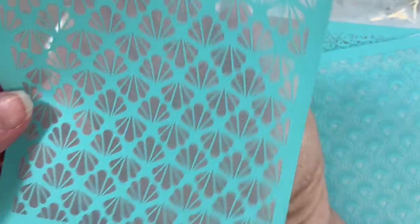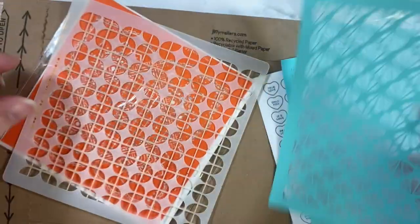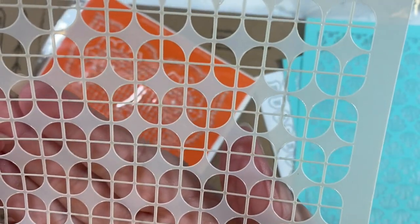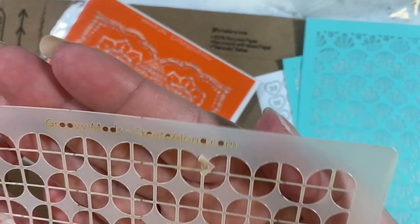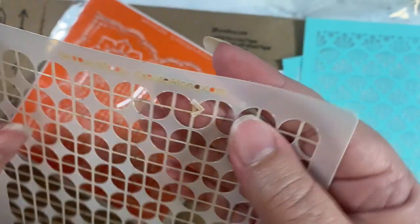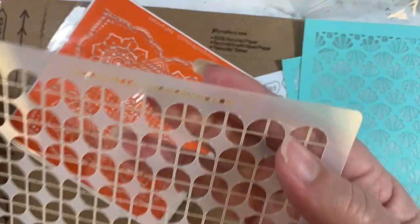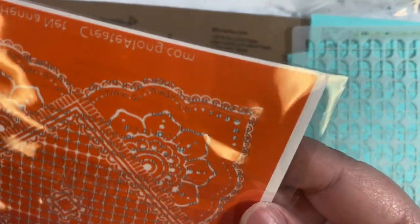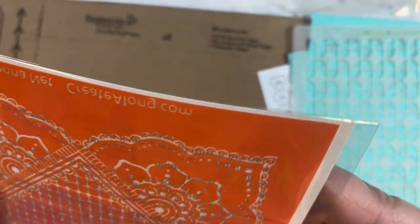And this is firecracker. And we got a stencil. Let's see, groovy mods is this one. Looks like we've got a little material left on there. There's that one. And then this one is still in its packaging and it's called henna net.